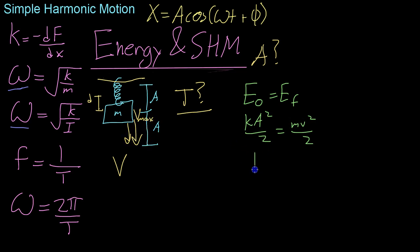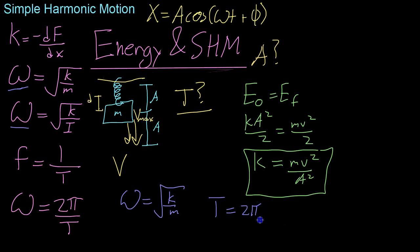Now, what we can do is solve for the k, and we find that k equals mv squared over a squared. Using this known k value now, we can plug it into our equation that we know for a period. Essentially, we know that omega equals root k over m, or that T equals 2 pi root m over k, because if you'll recall, omega equals 2 pi over T, as we have written down here.